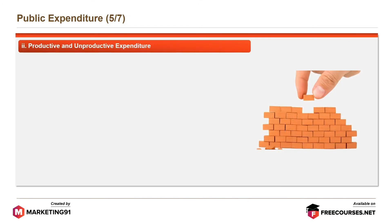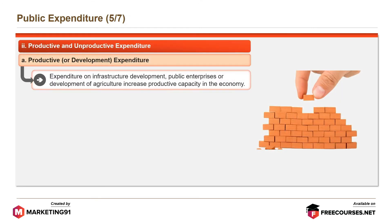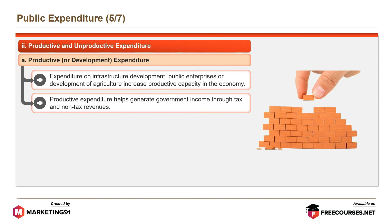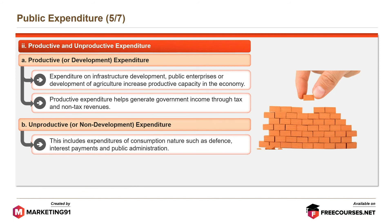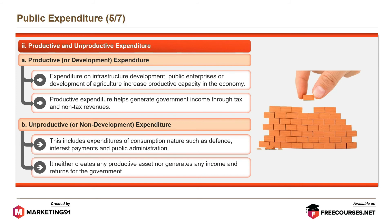Productive or development expenditure includes expenditure on infrastructure development, public enterprises, or development of agriculture, which increases productive capacity in the economy. It helps generate government income through tax and non-tax revenues. Unproductive or non-development expenditure includes expenditures of a consumption nature such as defense, interest payments, and public administration — it neither creates any productive asset nor generates income for the government.